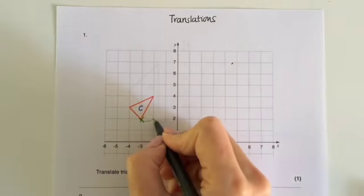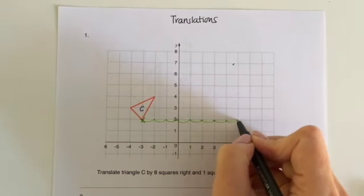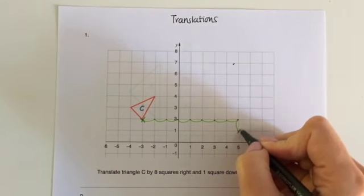So it moves one, two, three, four, five, six, seven, eight, and one square down.